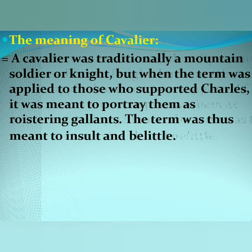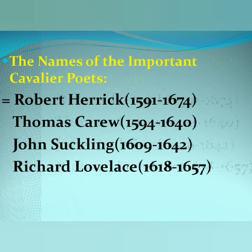A cavalier was traditionally a mounted soldier or knight, but when the term was applied to those who supported Charles the First, it was meant to portray them as roastering gallants. This term was thus meant to insult and belittle.